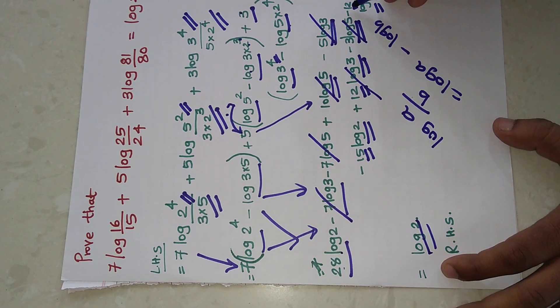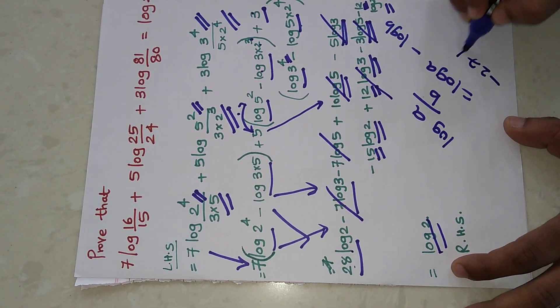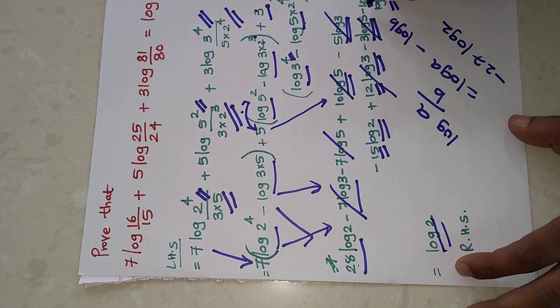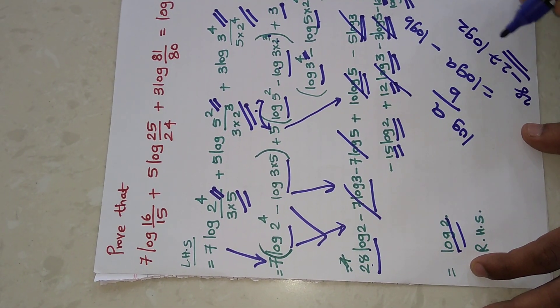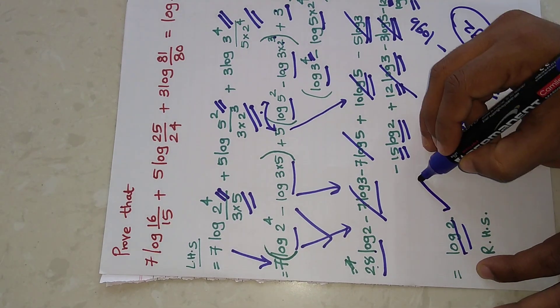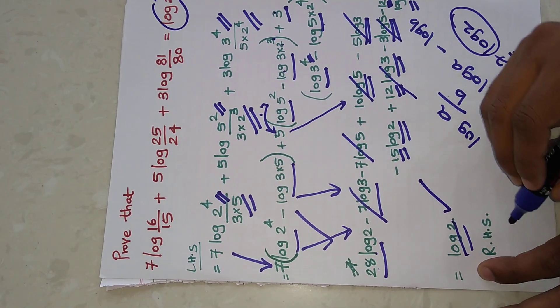But we have minus 15 and minus 12, so minus 27 log 2 for this and this, and 28. So 28 minus 27 is only one log 2. That is what we want on the right side.